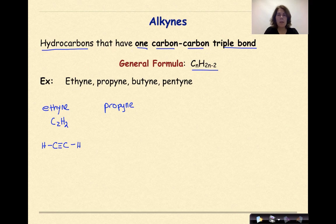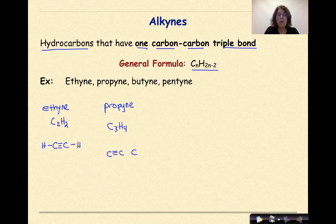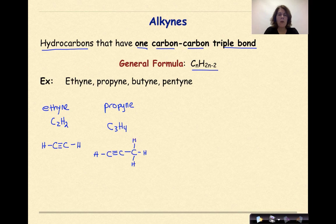Let's go on to propyne. Prop means three, so C3H4 — two times three is six, minus two is four. This one always looks bizarre because it doesn't seem like we'll have enough hydrogens. We draw three carbons, put the triple bond between one pair, and a single bond between the other two. Filling in bonds: the left carbon needs one more, the middle carbon already has four bonds, and the right end carbon needs three more. Adding in four hydrogens — it's like magic. Propyne is complete.